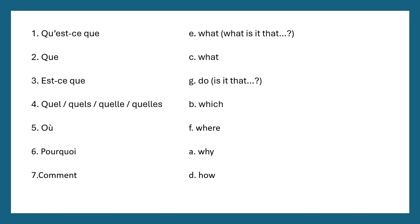Number four: those four variations — 'quel', 'quelle', 'quels', 'quelles' — all mean 'which'. The spelling varies in French depending on whether the noun is masculine, feminine, or plural. Number five: 'où' means 'where' — for example, 'où habites-tu?' means 'where do you live?' Number six: 'pourquoi' means 'why' — literally 'for what', because 'quoi' can also mean 'what'.